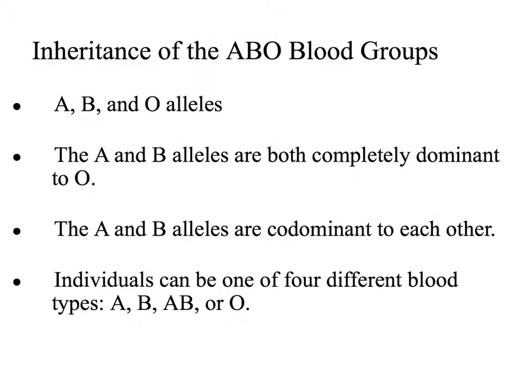One well-known case of multiple allelism is in blood types in humans. In this case, we see that there are three possible alleles: A, B, and O. The A and the B alleles are both completely dominant to the recessive O. A and B are co-dominant with each other.